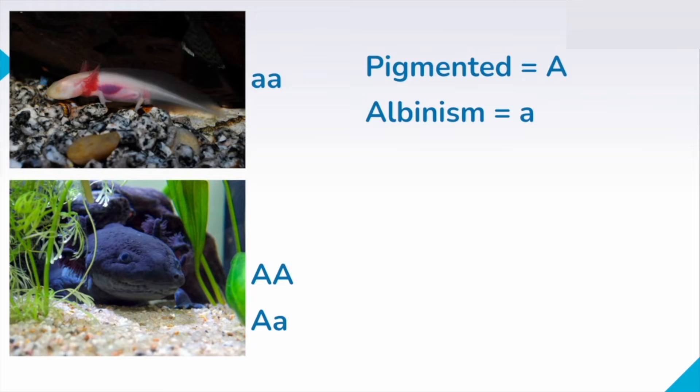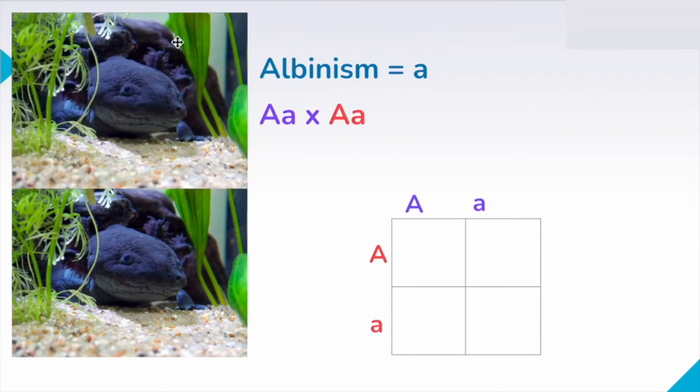So let's take a look at a practice problem involving these and our tool, the Punnett square. So let's say we have two pigmented axolotls that are both heterozygous, meaning they have one big A and one little a, and they are going to mate. We can use things like a Punnett square to see what the chances are of their offspring either being albino or having pigment. So in this case, we would take one parent and put it on the top of the Punnett square, separating out their alleles or their letters. We would take the other parent and separate out their alleles or letters as well. And then what we do is we drop down all our letters and we fill in the Punnett square.